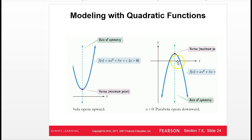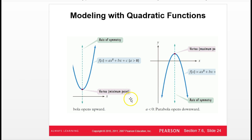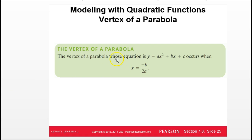If the leading coefficient a is negative, the parabola opens downward; if positive, it opens upward. The vertical line through the vertex is called the axis of symmetry. The vertex's x-coordinate is always -b/(2a) when you have the form ax² + bx + c. So if you're ever told to find the maximum or minimum — the high or low point — you use x = -b/(2a).